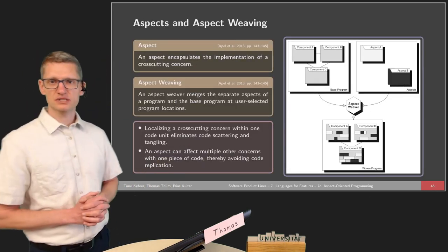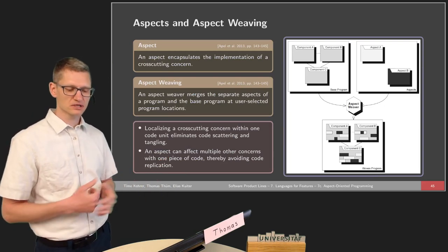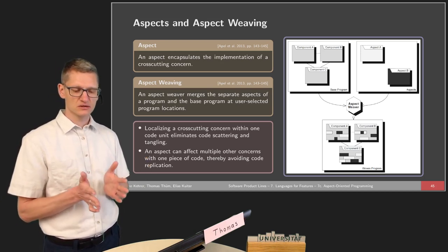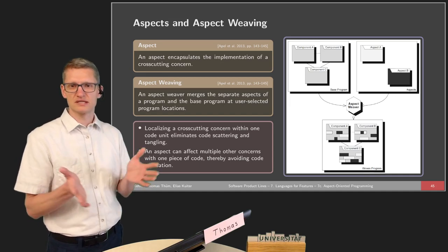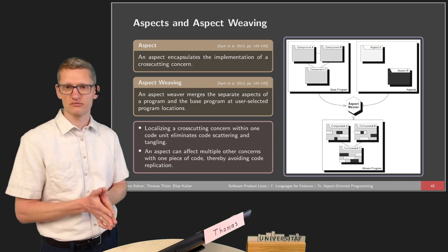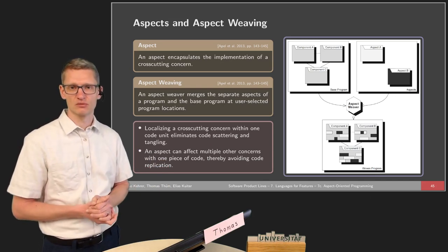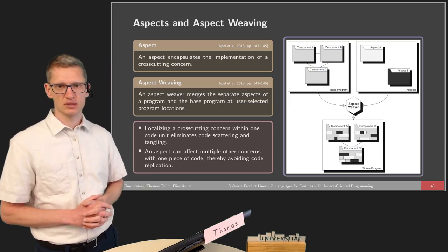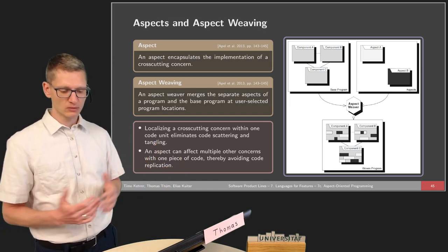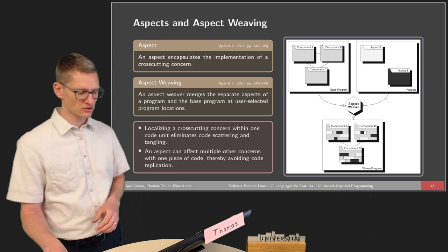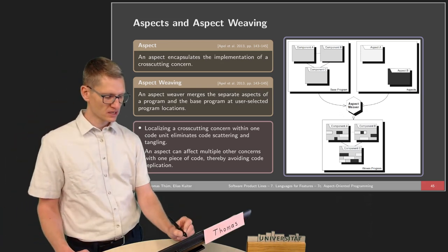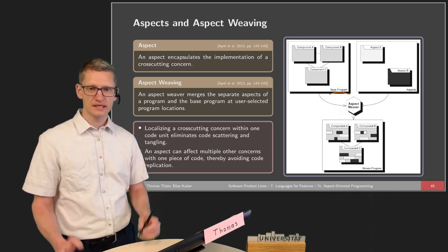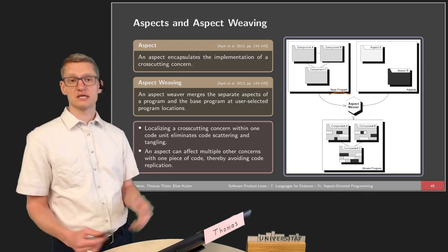So we will look at aspects — at aspect-oriented programming. What is an aspect? An aspect encapsulates the implementation of a cross-cutting concern. An aspect is basically another word for a feature module, but we will see in a minute why we need another term for this — why an aspect is not the same as a collaboration, a layer, or a feature module. An aspect encapsulates the implementation of cross-cutting concerns in one module.